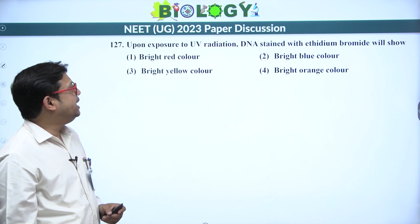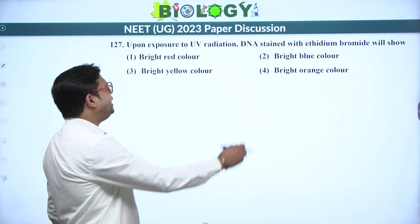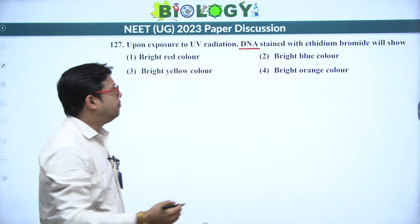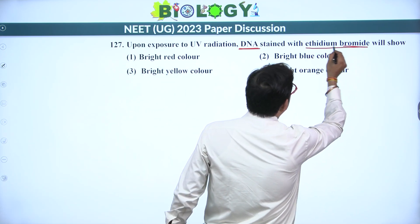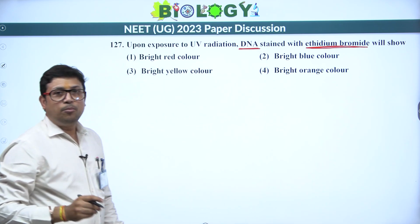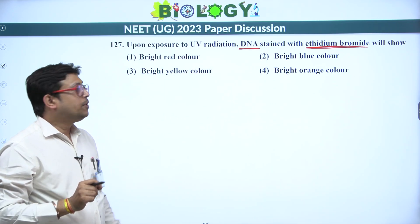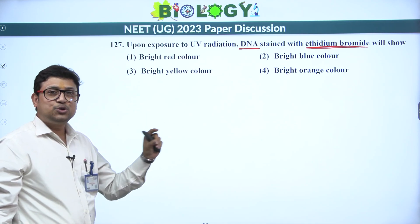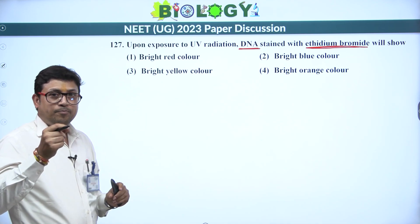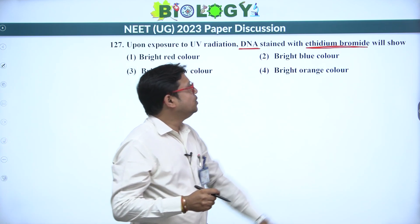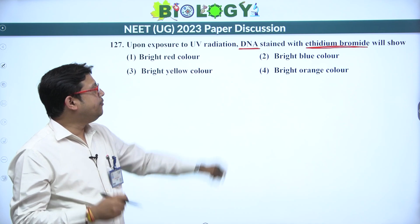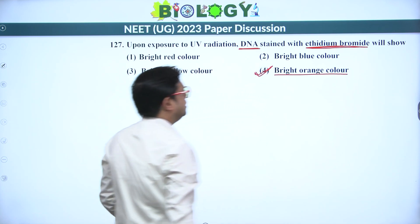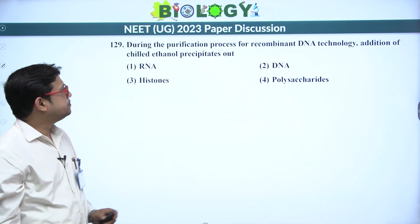Next: upon exposure to UV radiation, DNA stained with ethidium bromide will do what? In gel electrophoresis, DNA bands are stained by ethidium bromide. Ethidium bromide binds to AT base pairs; this staining cannot be seen with the naked eye, but when exposed to UV radiation, the DNA band attached to ethidium bromide will glow and give a bright orange color. It's a direct question — answer is 4.